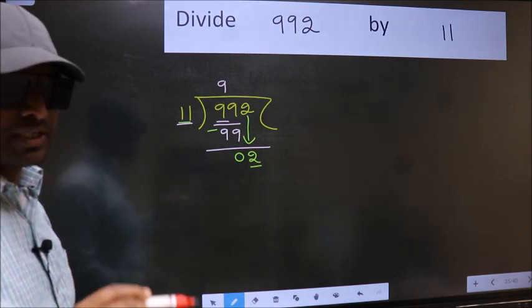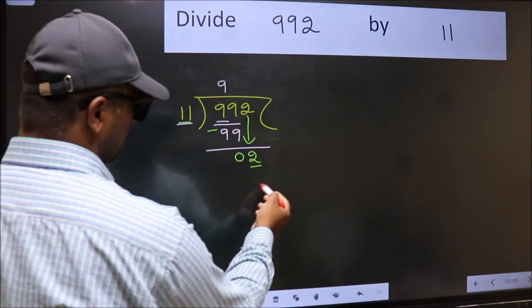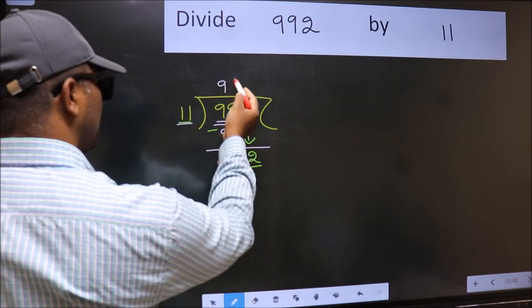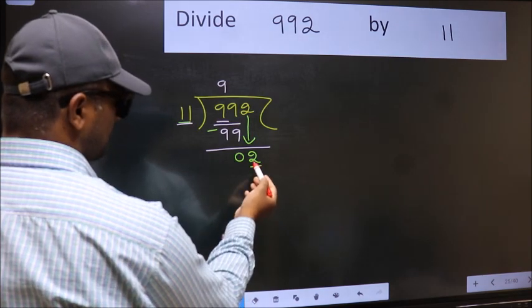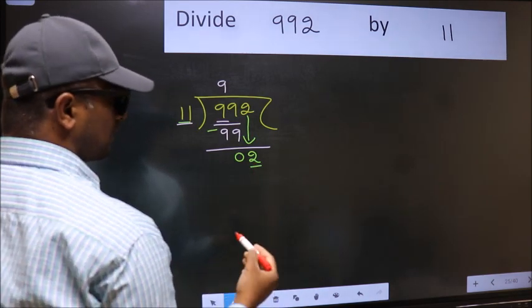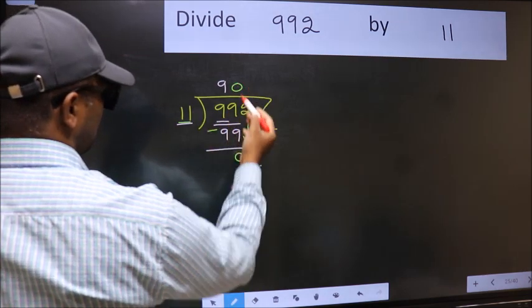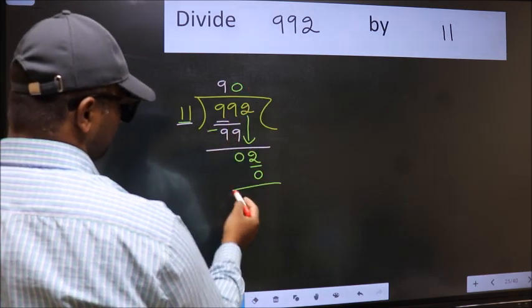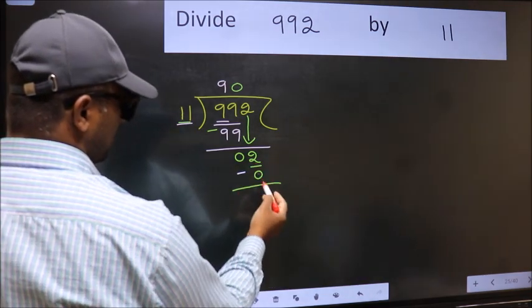Instead, what you should think of doing is: which number should we take here? If I take 1, we get 11, but 11 is larger than 2. So what we should do is take 0. So 11 into 0 is 0. Now subtract: 2 minus 0 equals 2.